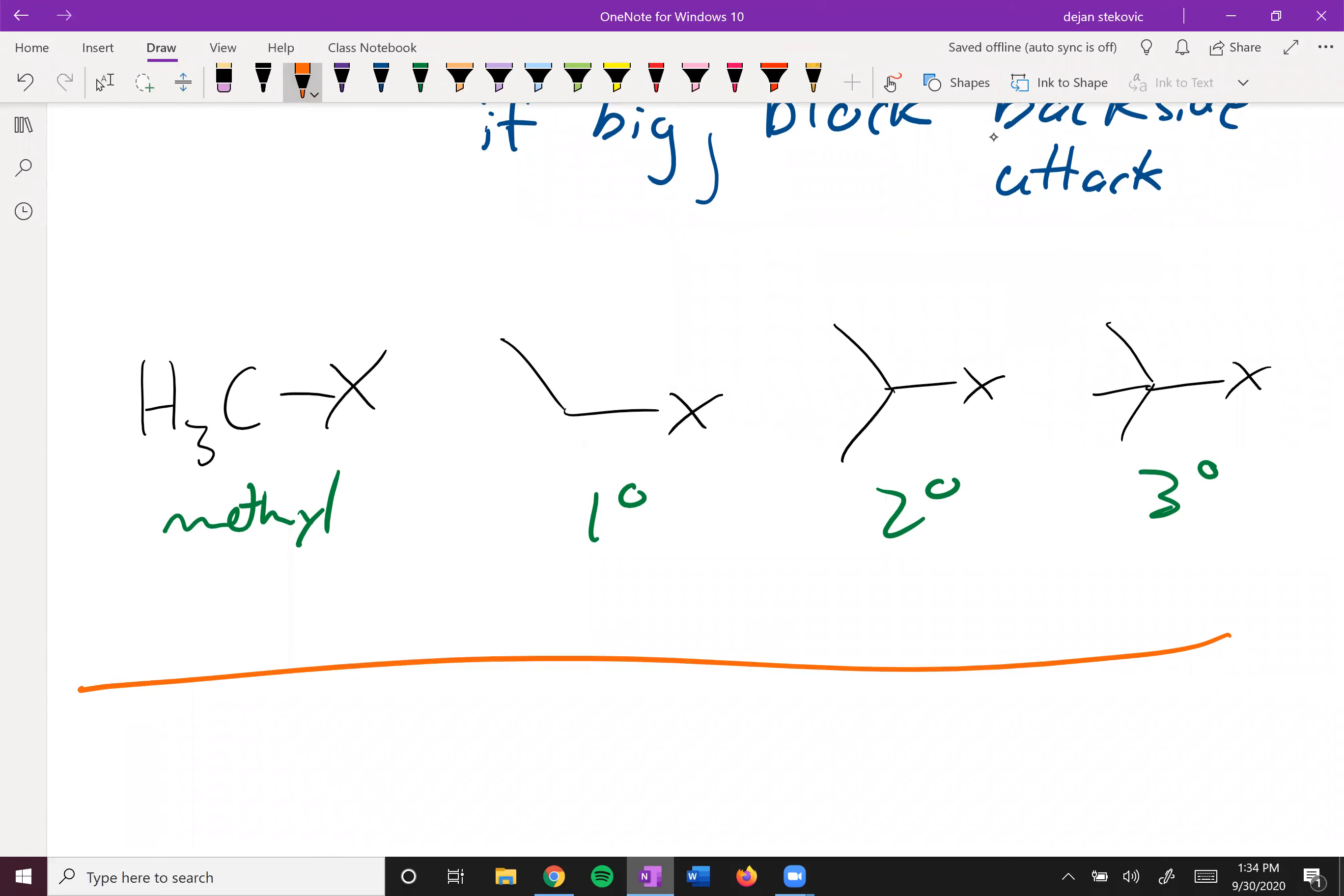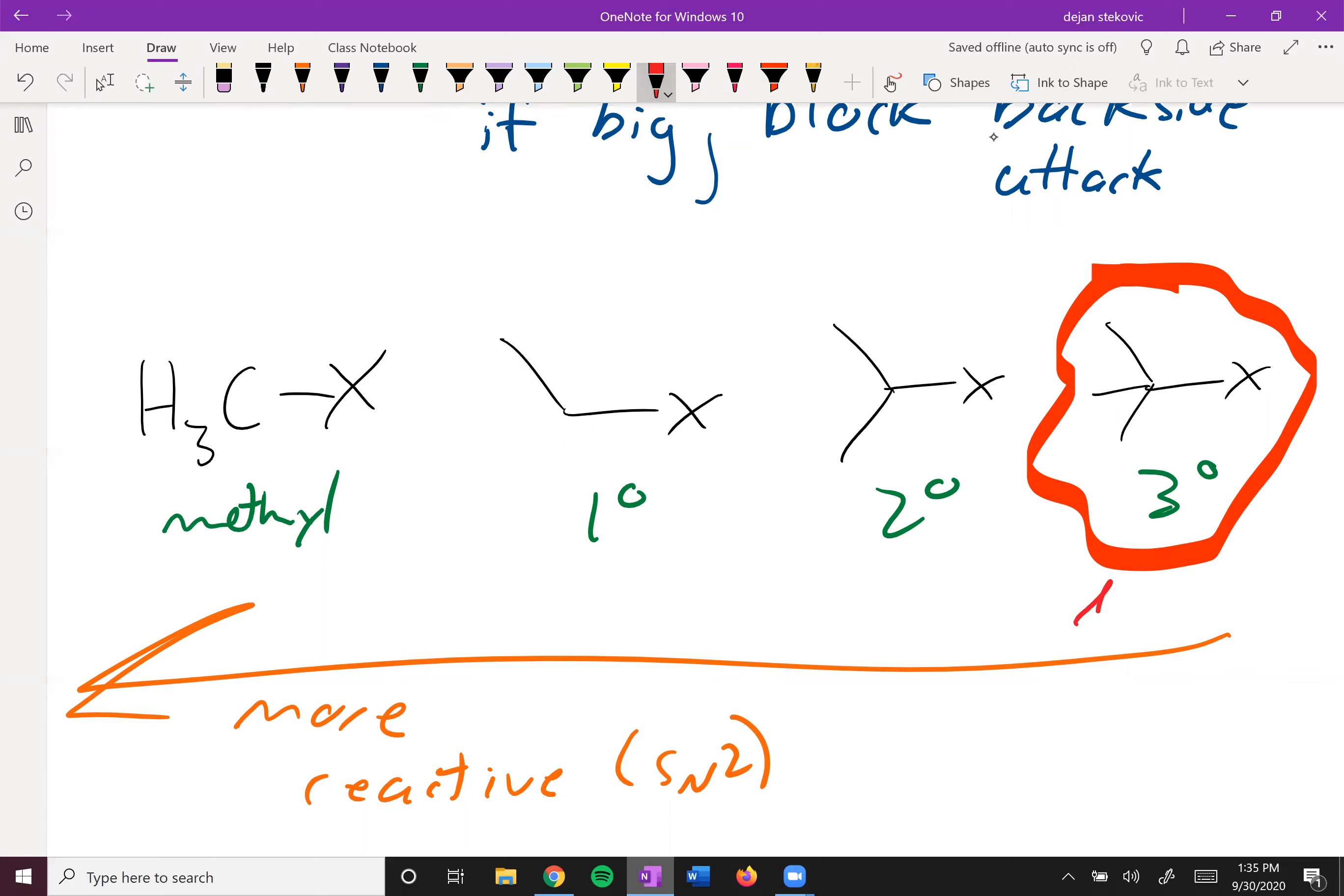So as we go to the left here, we become more reactive towards our SN2 reaction because there's less stuff to block this backside attack. And this tertiary is so bad that it's not going to happen, so we'll write no SN2 there. But all the other ones, it is possible.